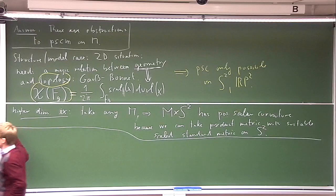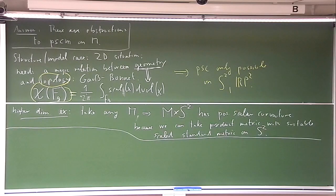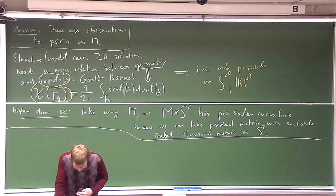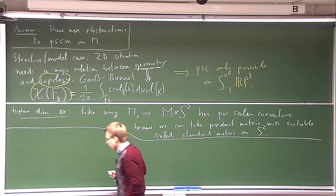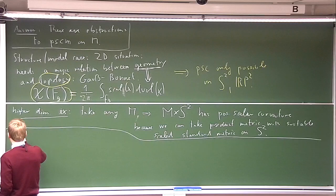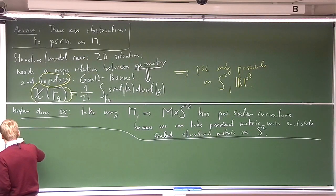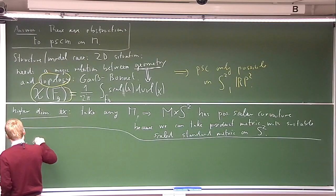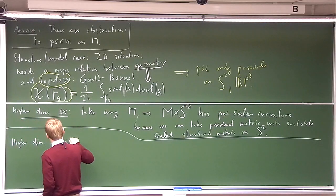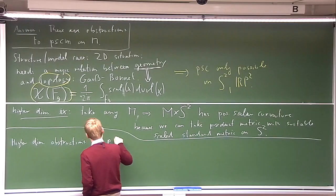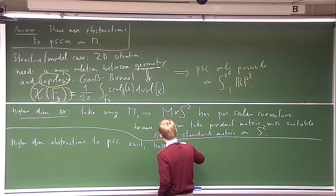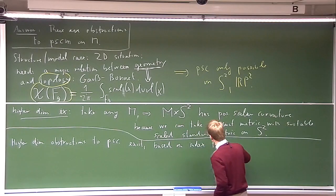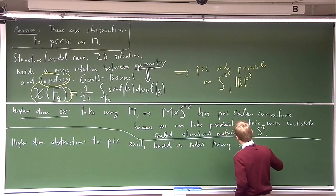This perhaps increases the suspense about why there should be any obstructions at all. The higher-dimensional obstructions to positive scalar curvature are based on index theory of the Dirac operator. That's going to be quite a long story.